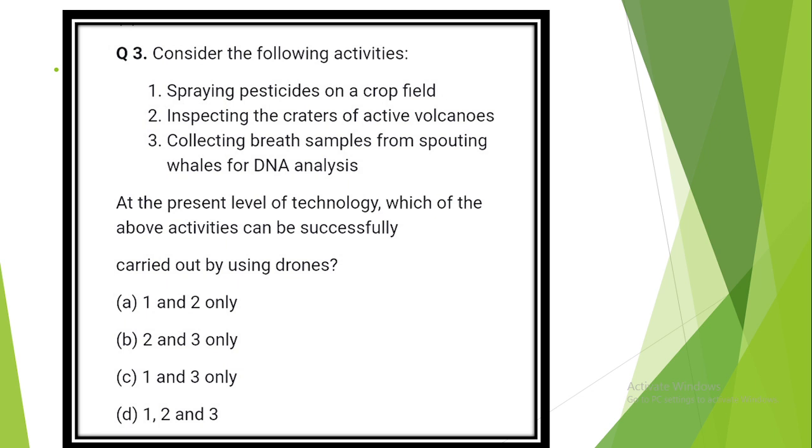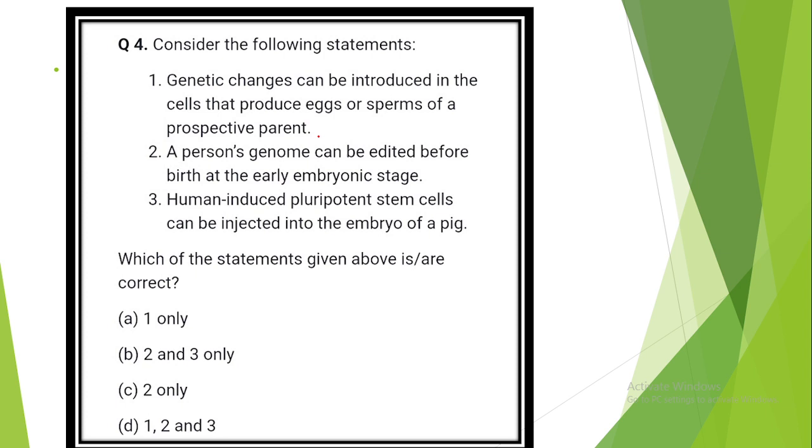Consider the following activities. At the present level of technology, which of the above activities can be successfully carried out by using drones? The answer is option D: Spraying pesticides on crop fields, inspecting the crater of active volcanoes, collecting breath samples of spouting whales for DNA analysis. Consider the following statements. The answer is option D. Genetic changes can be introduced in the cells that produce eggs or sperm of a prospective parent. A person's genome can be edited before birth at the early embryonic stage. Human-induced pluripotent stem cells can be injected into the embryo of a pig.